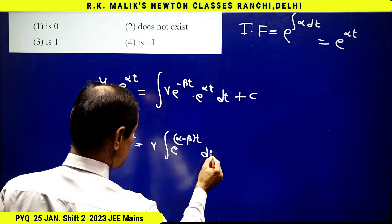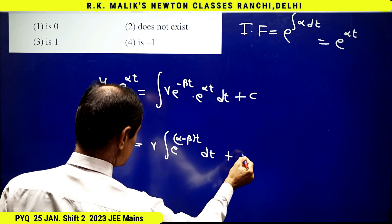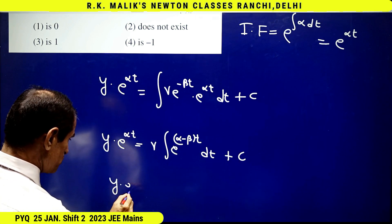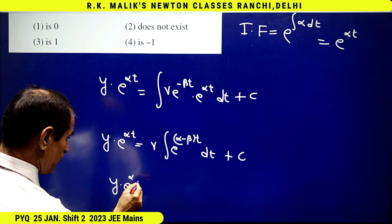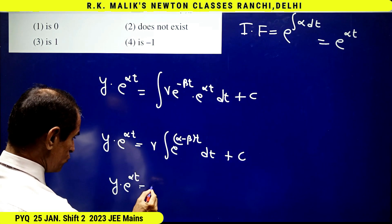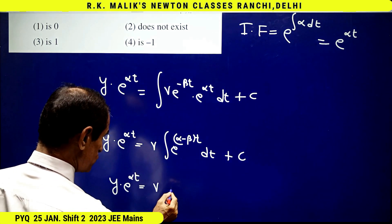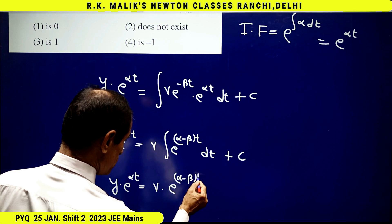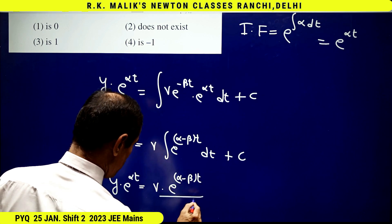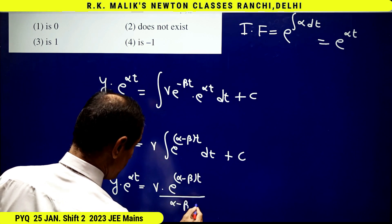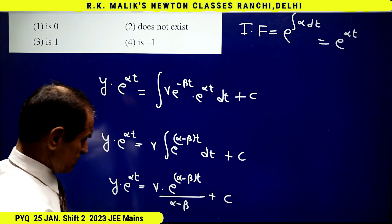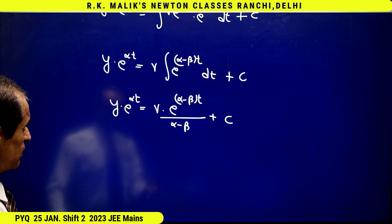That is, y into e to the power alpha t equals gamma times e to the power (alpha minus beta) t, upon (alpha minus beta), plus c.